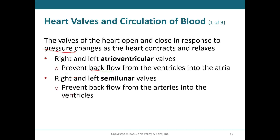The semilunar valves prevent backflow into the larger chambers — the ventricles. They are outflow valves. The pulmonary trunk is anterior to the aorta. The pulmonary semilunar outflow valve is between the right ventricle and the pulmonary trunk. The aortic semilunar outflow valve is on the left side between the left ventricle and the aorta. If you have an insufficient aortic valve, backflow goes to the left ventricle, which could back up into the lungs via the pulmonary veins, causing pulmonary edema.